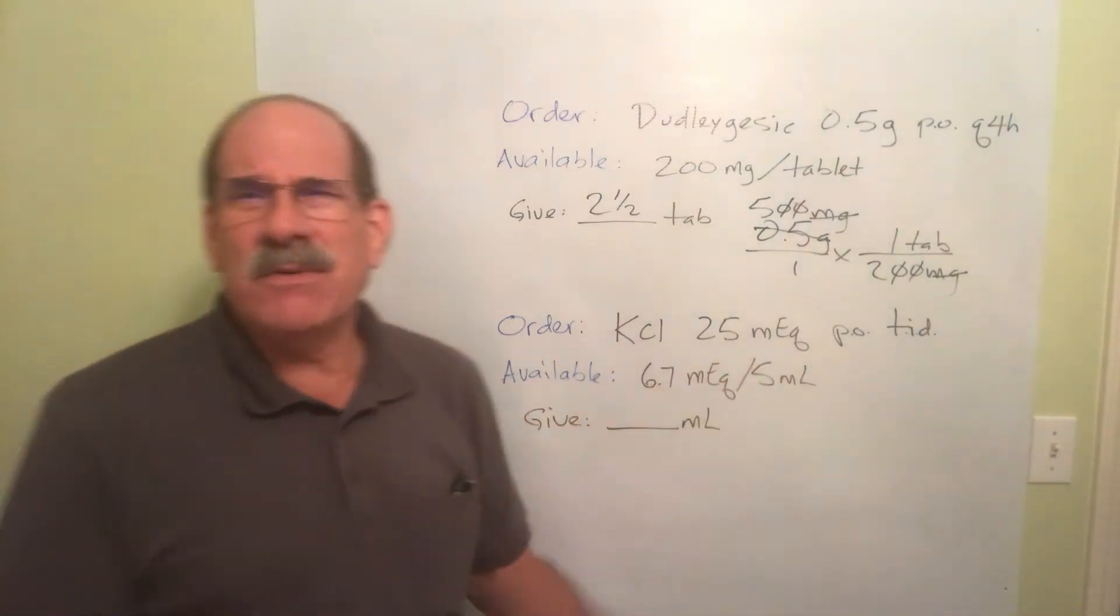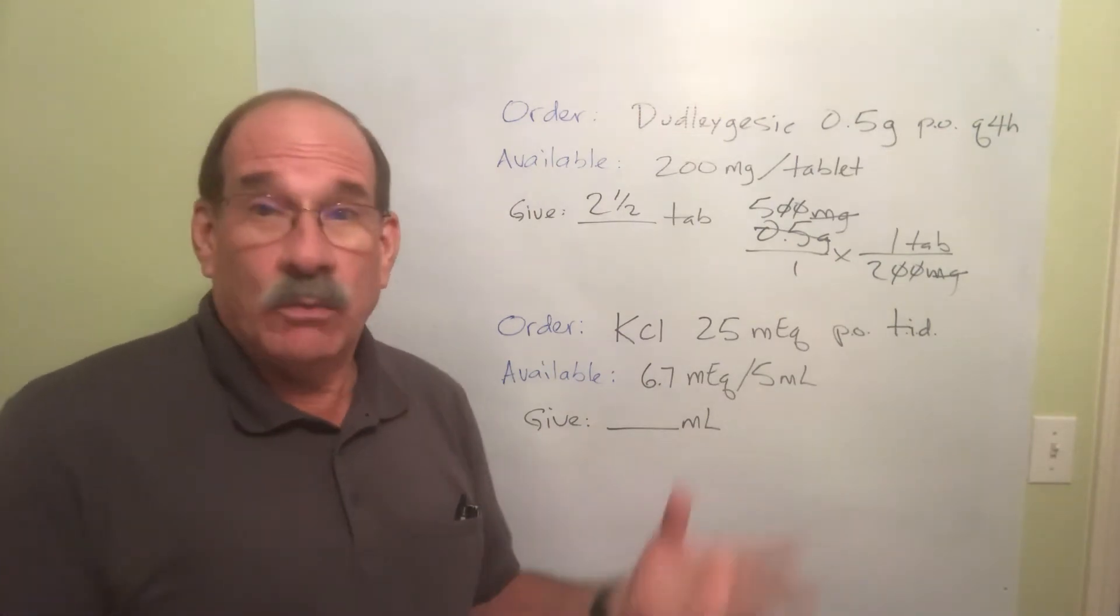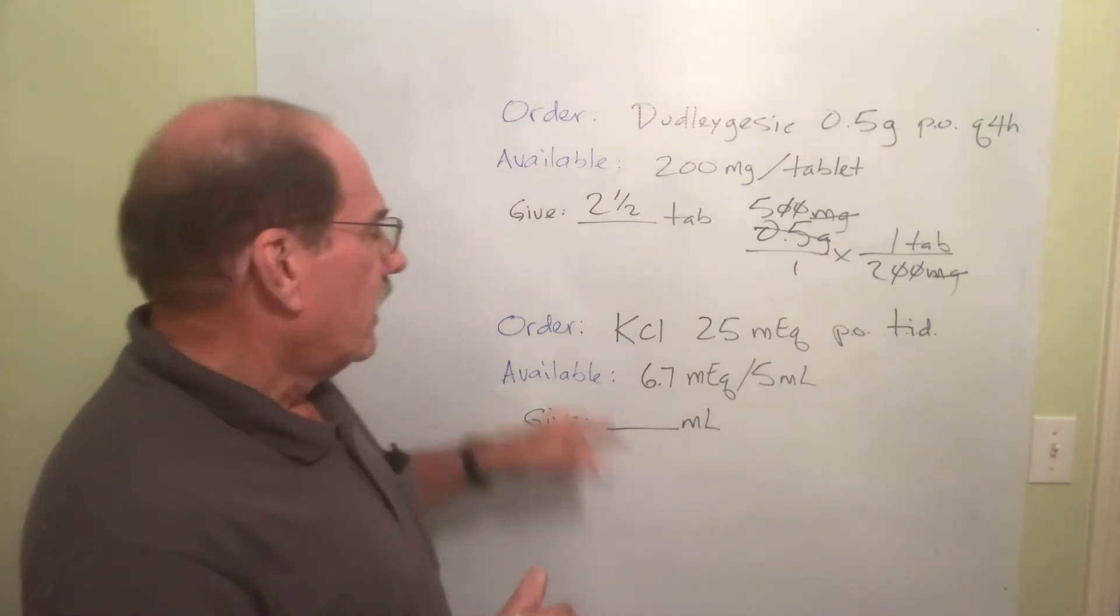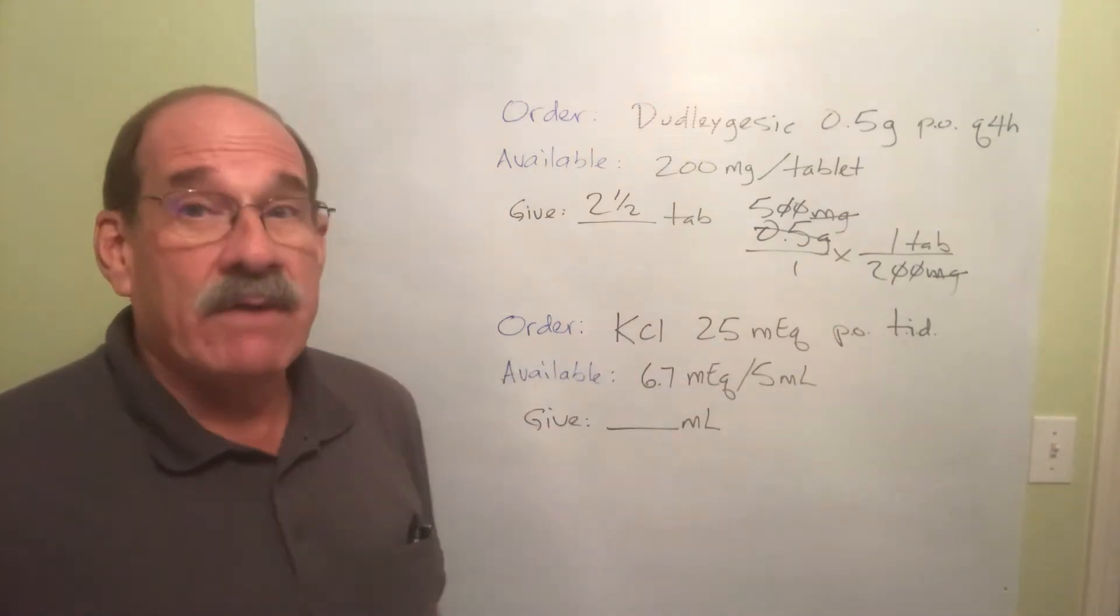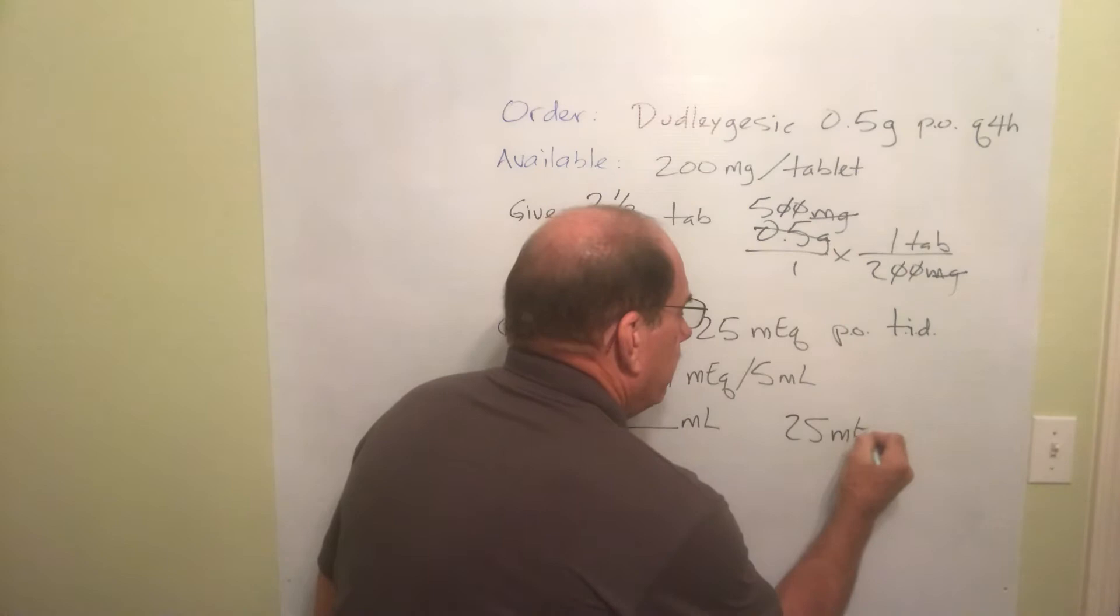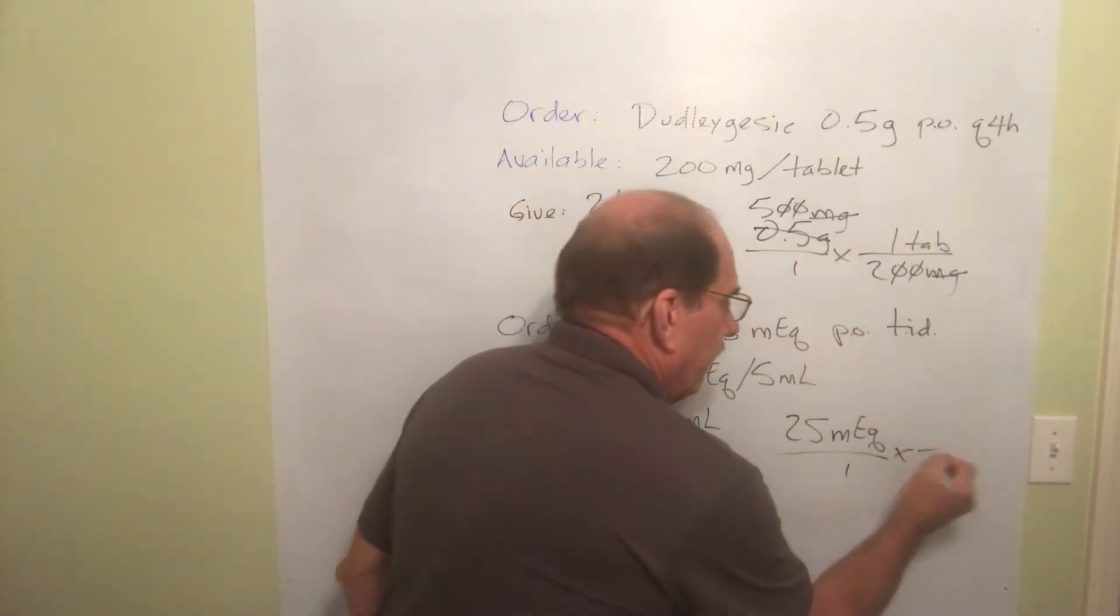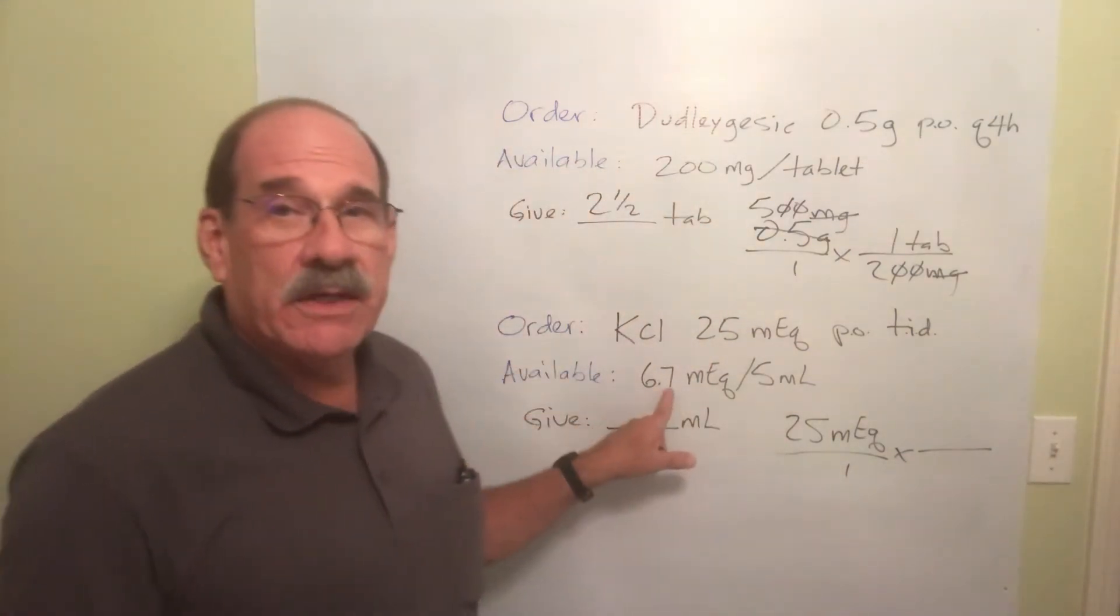Oh here we go again. Milliequivalents. It won't matter what it is, whether you know what it is. Just work it out. It comes out just fine. The order's for 25 milliequivalents. 25 milliequivalents. Put it over one.